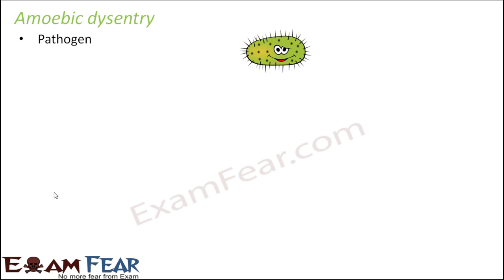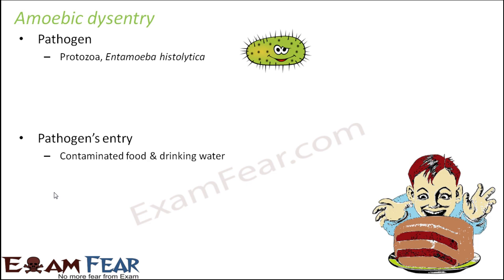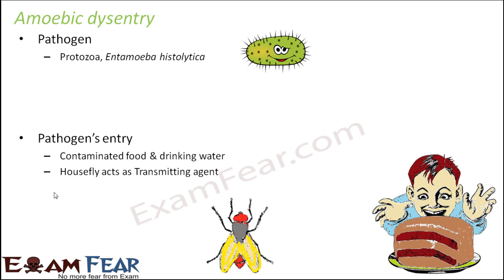Dysentery is caused by a pathogen called protozoa, specifically Entamoeba histolytica. In this case also, the pathogen enters the body through food and contaminated drinking water. A lot of insects act as the transmitting agent, carrying these pathogens from one person to another or one place to another. Houseflies are a very common transmitting agent. For example, when people defecate in open fields, houseflies sit on that human excreta, pick up the pathogen, and then sit on somebody's food, contaminating it. The person who eats that food takes the pathogen inside his body.